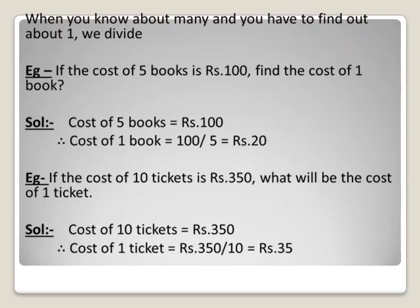The example is: if the cost of 5 books is rupees 100, find the cost of one book. That means I bought 5 books and paid rupees 100 — so what should be the cost of one book? The solution is: since the cost of 5 books is rupees 100, therefore the cost of one book is 100 divided by 5, that is rupees 20.